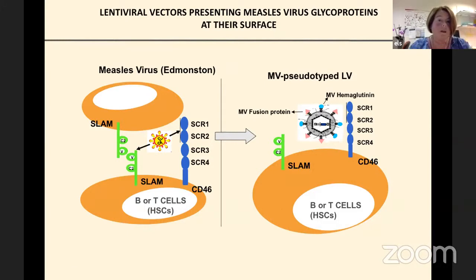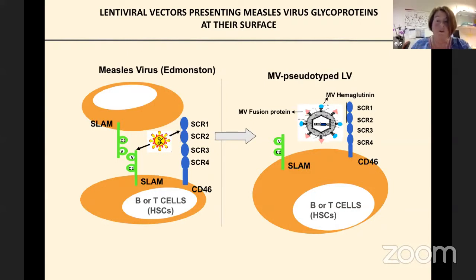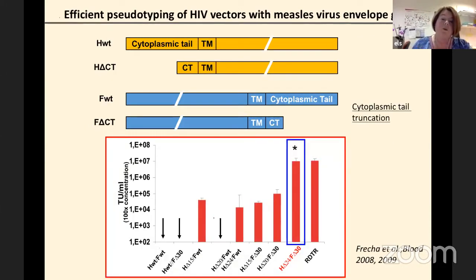A second important candidate is the measles virus glycoproteins. Their receptors are SLAM and CD46, present on B cells, T cells, and hematopoietic stem cells. We wanted to transfer the hemagglutinin — which provides attachment to the receptor — and the fusion protein of the measles virus to the surface of a lentiviral vector to give it the same tropism. Again, we had to perform a reduction of the cytoplasmic tail, and the constructs with the strongest deletion incorporate efficiently on lentiviral vectors, giving high titers.